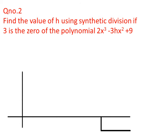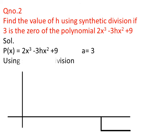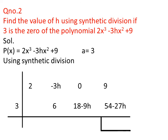In this question we have to find the value of h using synthetic division if 3 is the zero of the polynomial 2x³ - 3hx² + 9. The polynomial is p(x) = 2x³ - 3hx² + 9 and a = 3. We write the coefficients, then write the value of a = 3 on the left. Bringing down 2, we multiply 2 by 3 to get 6, and write 6 under the term -3h. Adding gives 6 - 3h. The product of (6 - 3h) and 3 is 18 - 9h, written under 0.